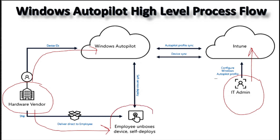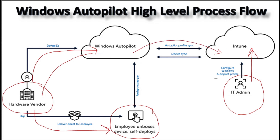The third one is the employee or the end user who is going to perform the Autopilot. When the hardware hash is uploaded by the hardware vendor, those hashes are synced between Windows Autopilot services and Intune. Once the synchronization is done, all the deployment configuration profiles created in Intune are targeted to that hardware hash, and then once the user is performing the Autopilot, the very first step is to check against the Windows Autopilot service whether the machine is an Autopilot machine or not.